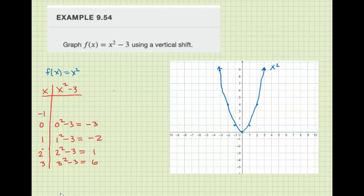On the other side, same values. (-1)² - 3 is -2, (-2)² - 3 is 1, and (-3)² - 3 is 6. So let's graph these.